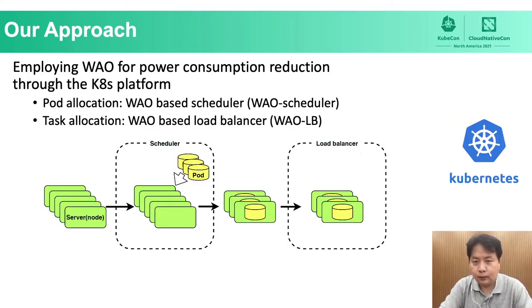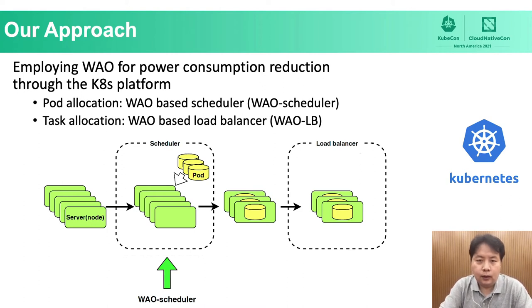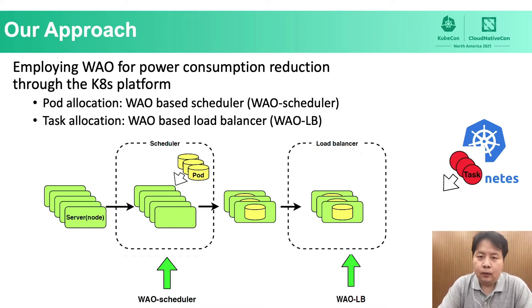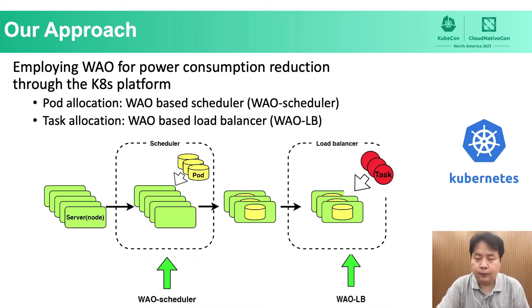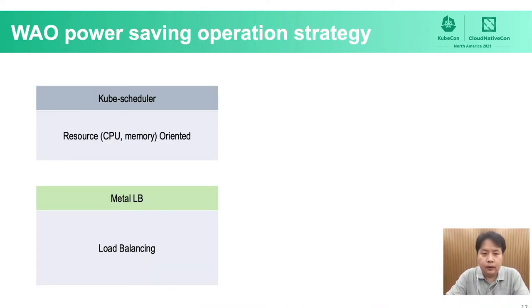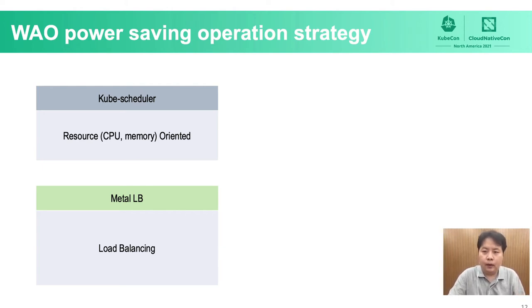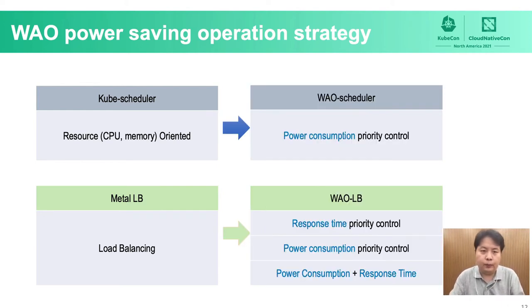To realize power consumption reduction on Kubernetes, our approach consists of two major steps. First, we develop a WoW-based scheduler — WoW Scheduler — for pod allocation, and a WoW-based load balancer — WoW LB — for task allocation. Tasks are then allocated to pods depending on requests from the client. The Kube Scheduler allocates pods by considering system resources such as CPU and memory of each node, while Metal LB acts as a simple load balancer using standard routing protocol. Our proposed WoW Scheduler provides power consumption priority control, and WoW LB can manipulate task allocation priority between power consumption and response time.